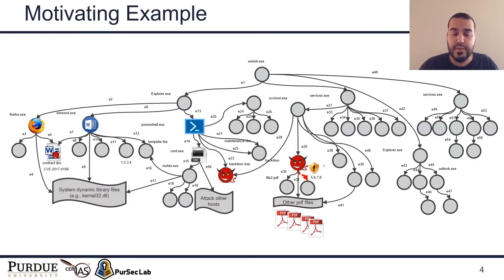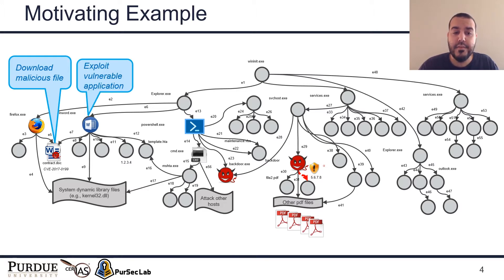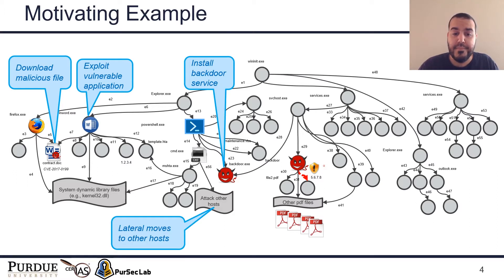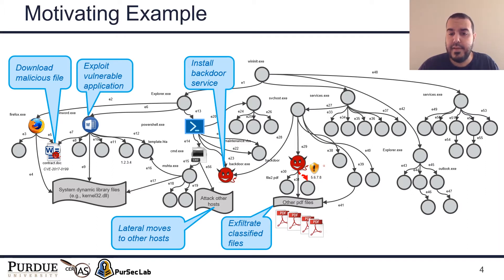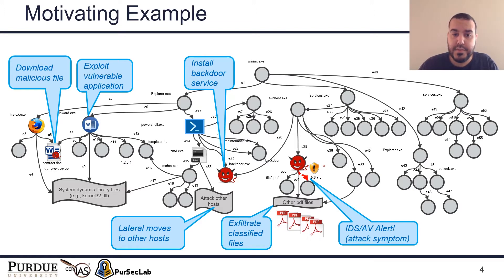As a case study and motivating example for ATLAS, I'll present this attack scenario. A web user who uses Firefox downloads a malicious file, opens the malicious file in a vulnerable application which leads to the installation of a backdoor into the system, allowing the attacker to infiltrate and laterally move to other hosts, and exfiltrate some classified files. Eventually, an antivirus or intrusion detection system detects this malicious event and reports it to the administrator, and attack investigation takes place.